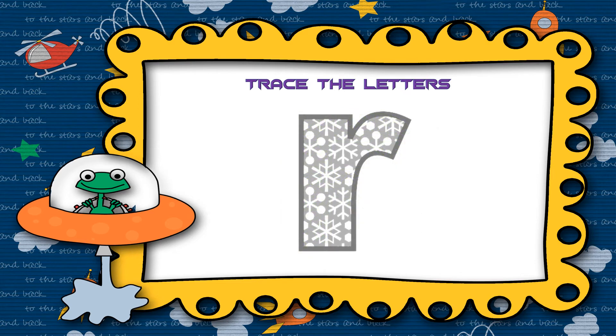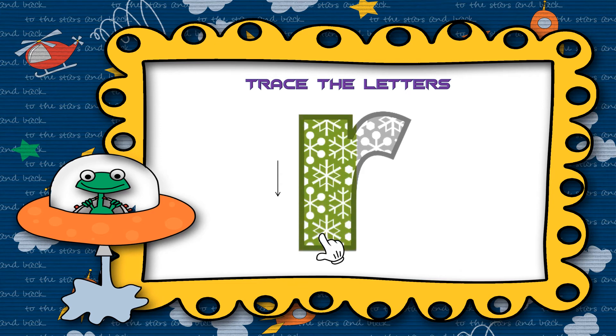For small r, start from the middle and draw a straight line down. Then going to the middle again, draw a curve to the right.